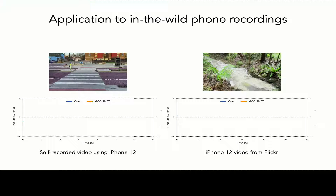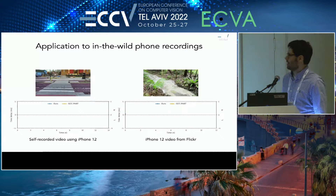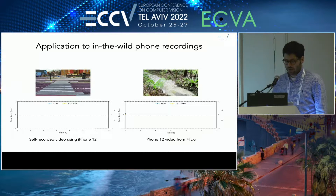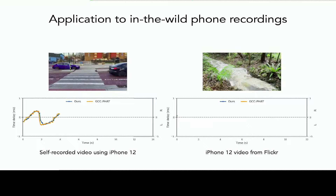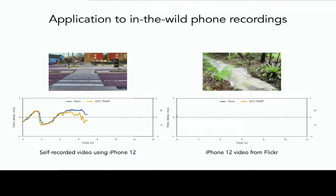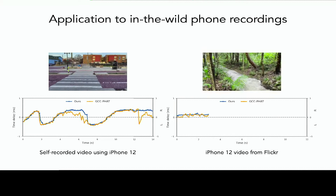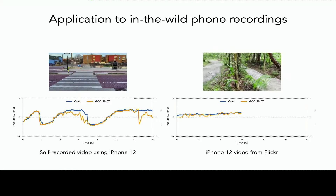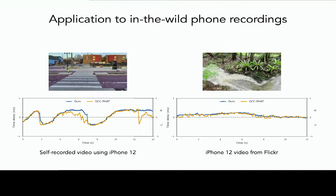One exciting direction is that pretty much all modern phones now shoot stereo sound — on iPhones, for example, ordinary recordings have useful stereo sound. So we tested on recordings from iPhones, including some we collected ourselves. The y-axis shows the predicted time delay and the x-axis is time, essentially telling us the angle to cars as they drive by. You can also take video downloaded from the internet — we searched Flickr for iPhone 12 videos — and as a person's position changes in the scene, we can estimate the angle to a waterfall.